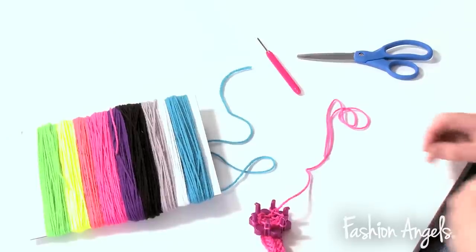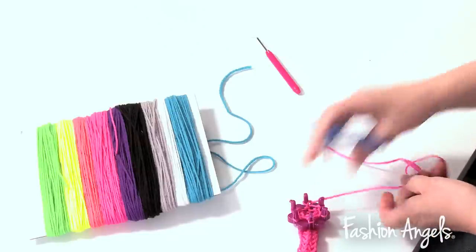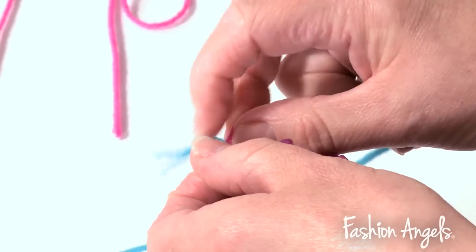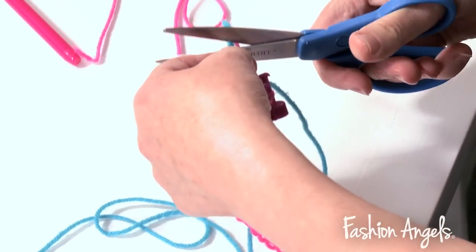Now that we've reached our desired length, we are going to cut the pink yarn and then double knot our pink yarn with the blue. Now we are going to cut the ends.